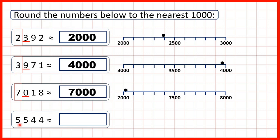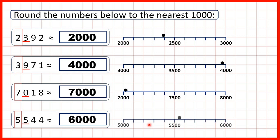Finally, we have 5,544. We highlight the place value and underline the digit to the right. Because it's a five — if it's five or more, we round up — that means that this five in the thousands is going to become a six, so we get 6,000.